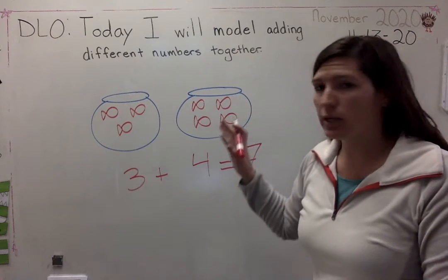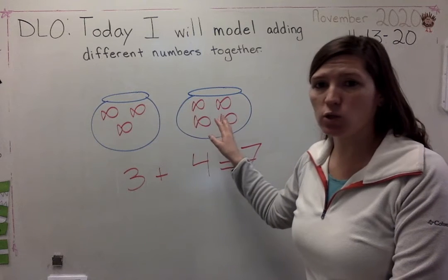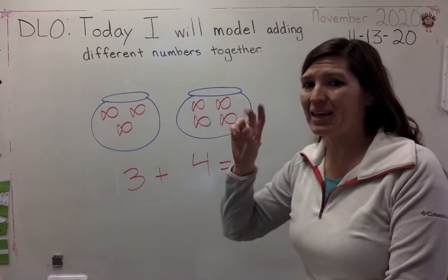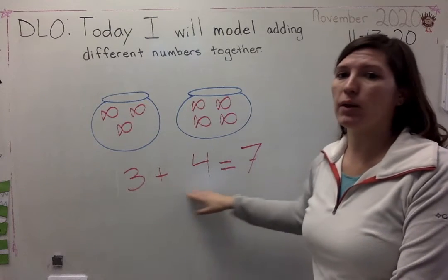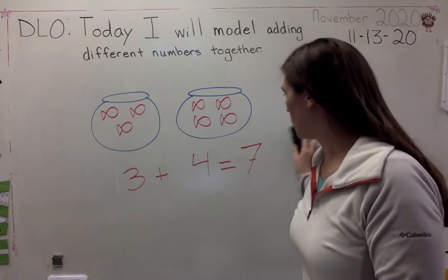I have seven fish all together because three plus four equals seven. I modeled it in a few different ways here. I modeled it by drawing pictures. I modeled it by counting the total and I modeled it by writing an equation. Let's do another one.